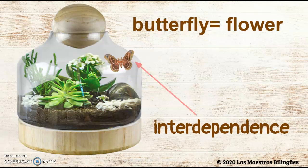The butterfly and the plants. The butterfly will lay its eggs on the plant and the plant gives the pollen to the butterflies.